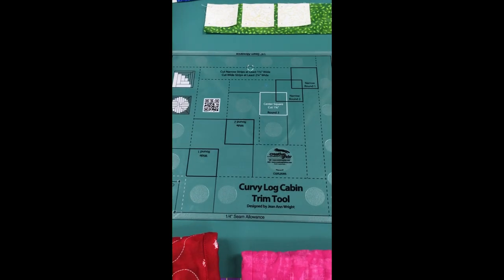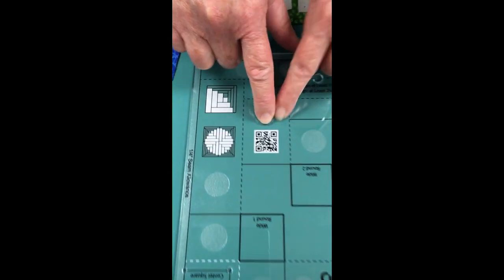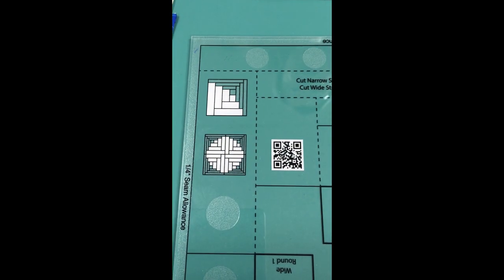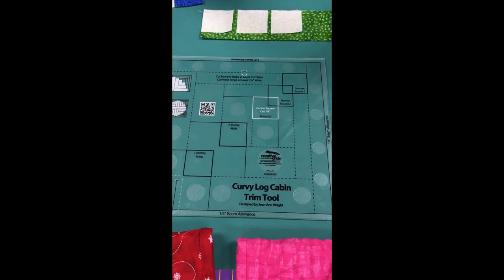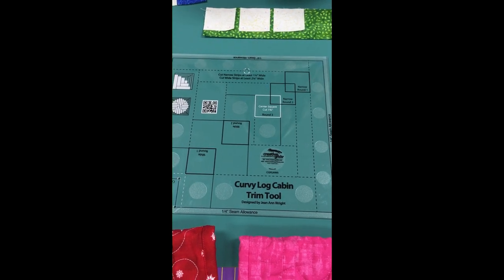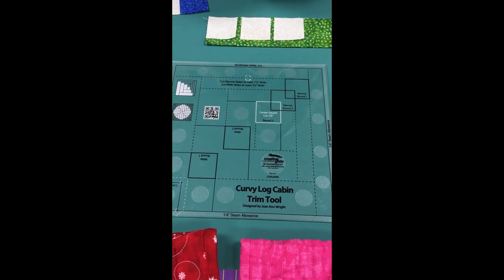These are Creative Grids rulers. They have a QR code on the front that you can scan to access a video showing how to use the tool. If you need a refresher, it's easy to find. You can also download another copy of the instructions from the Creative Grids website.